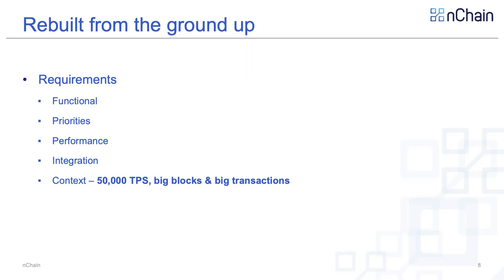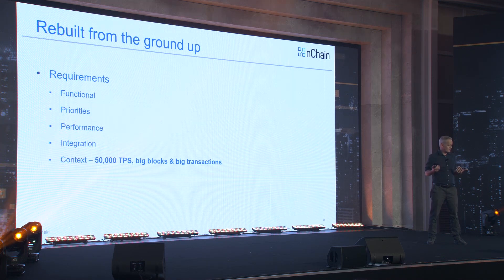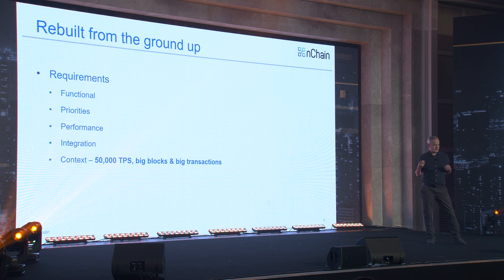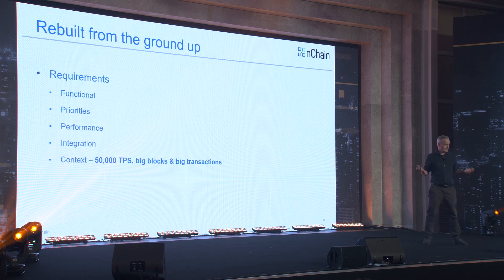Most important, of course, is the context. Terranode targets 50,000 transactions per second — big blocks, big transactions. These are fundamental things that impact the design and architecture of the software. The current software has issues because the fundamental design there is a one megabyte block. We're fixing these in the current software, but in Terranode, we'll have that right from the beginning.